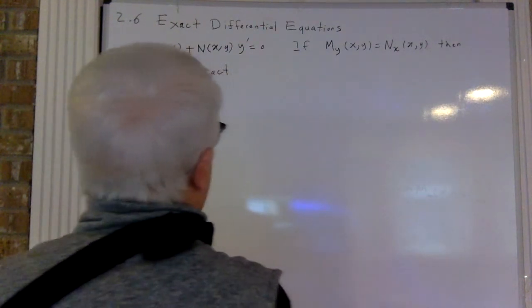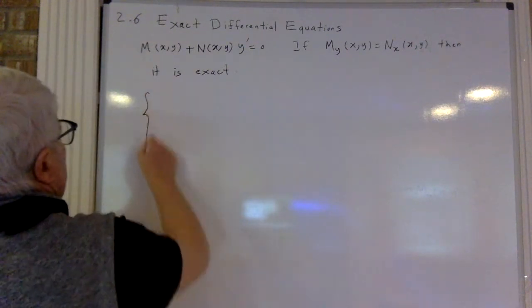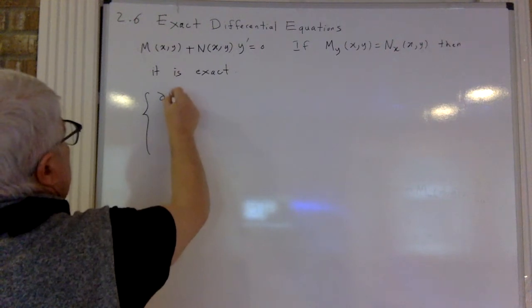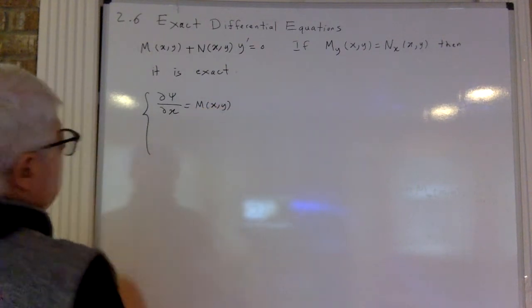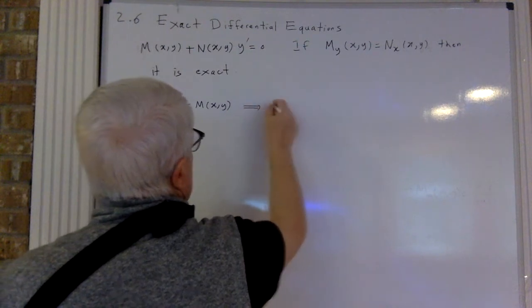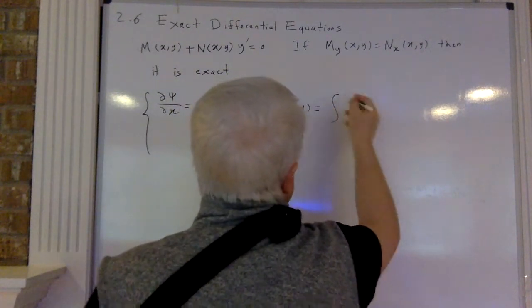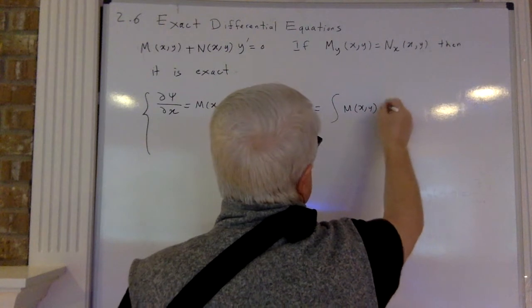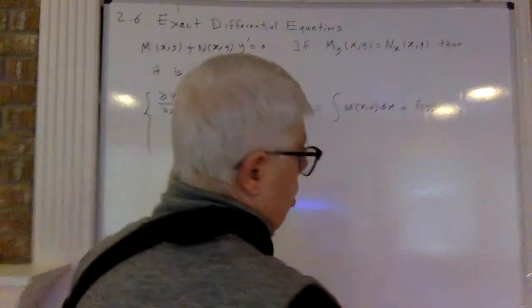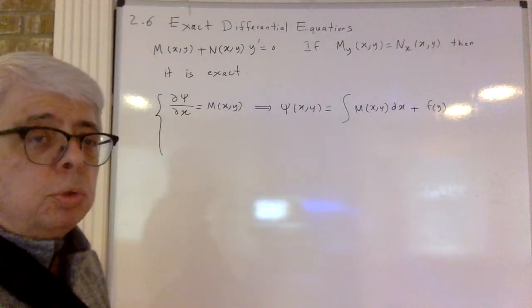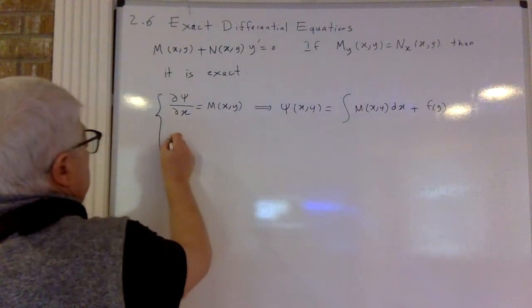So we have dc/dx equals M(x,y). This gives me c(x,y) as the integral of M with respect to x, plus a constant — and this constant should be a function of y. With respect to x, any function of y acts as a constant, so when you integrate you leave a function of y.